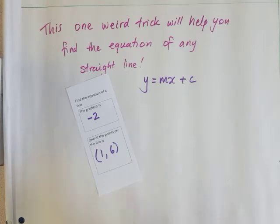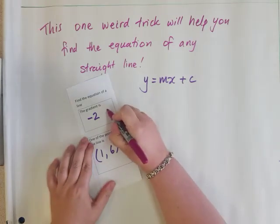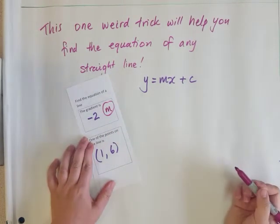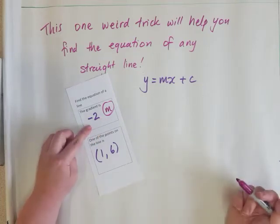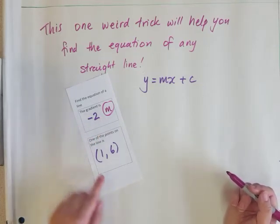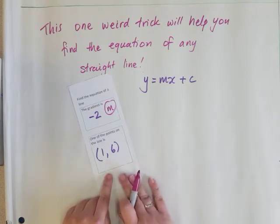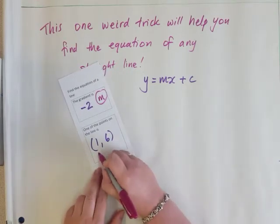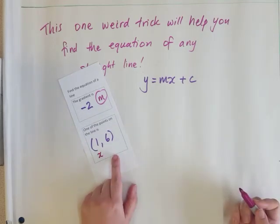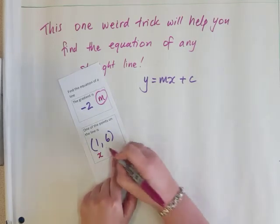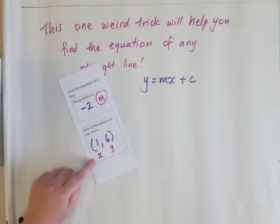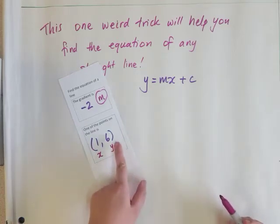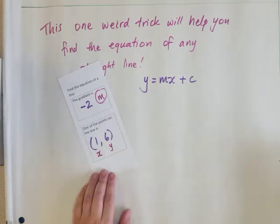The gradient we know is the letter m, so m is the number -2. For the coordinate points, we know that the first number in the coordinate is the letter x and the second number is the letter y. So here x is 1, y is 6, and m is -2.